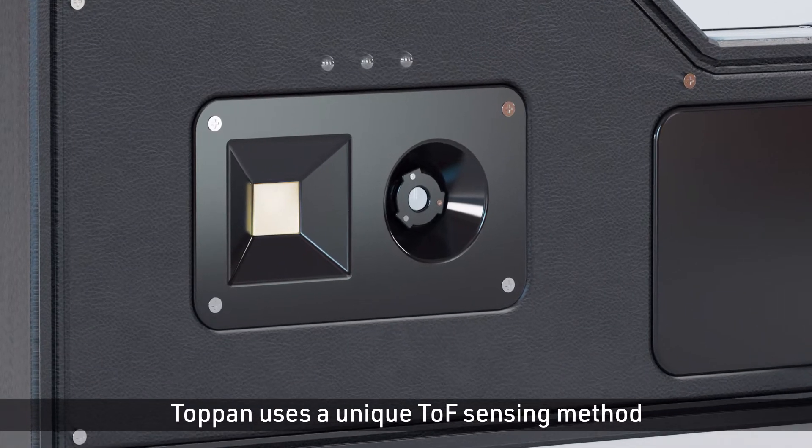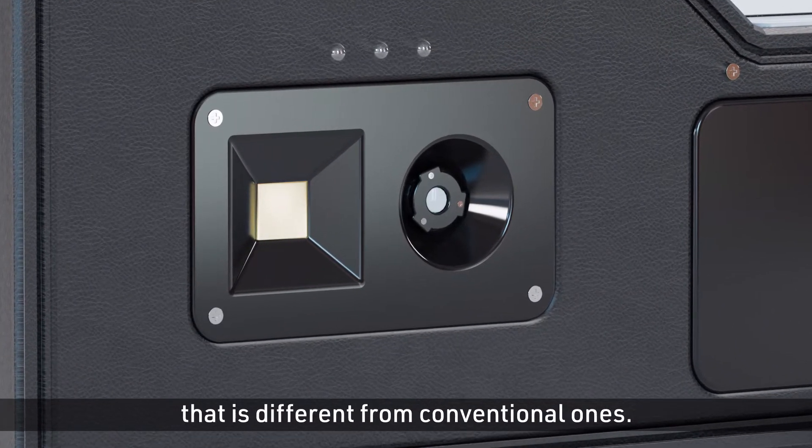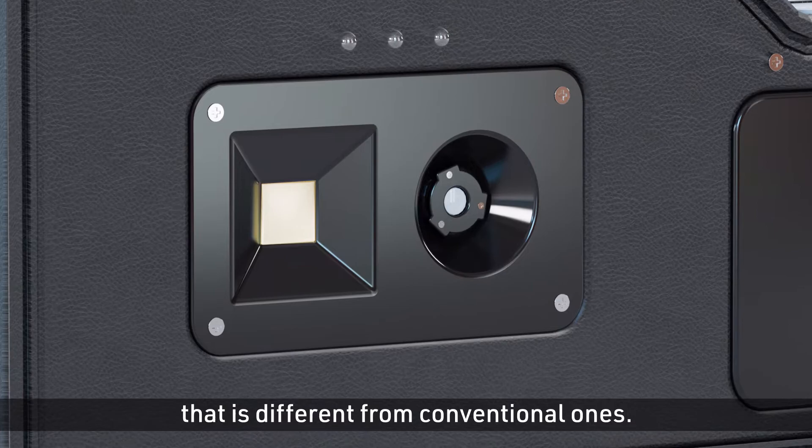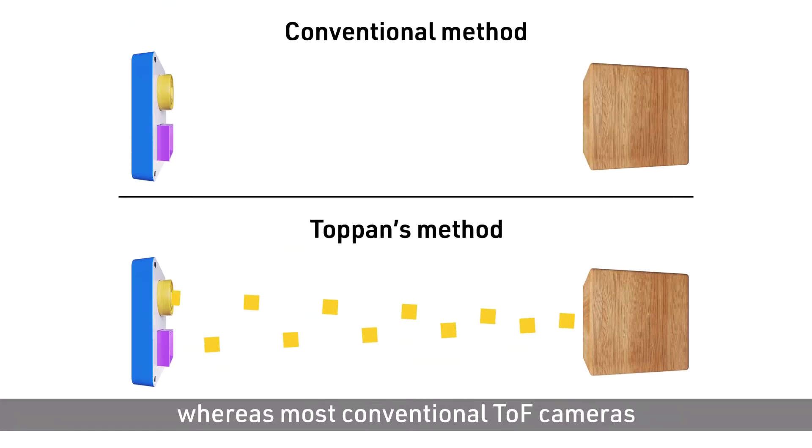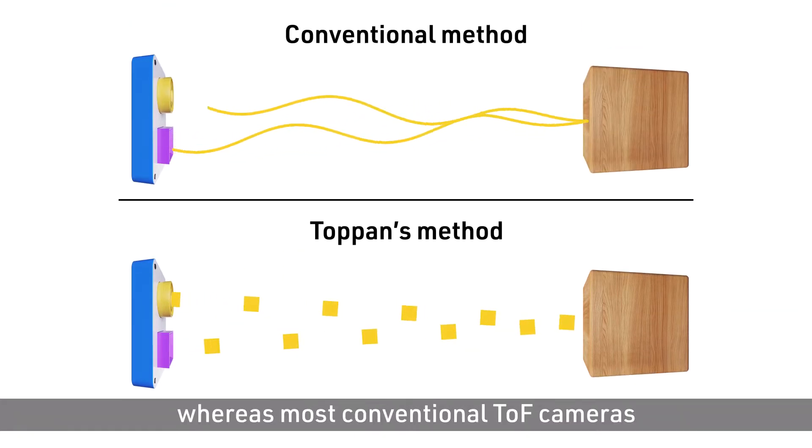Toppan uses a unique TOF sensing method that is different from conventional ones. Toppan TOF sensing employs a short pulse modulation for light emission, whereas most conventional TOF cameras use a continuous wave modulation.